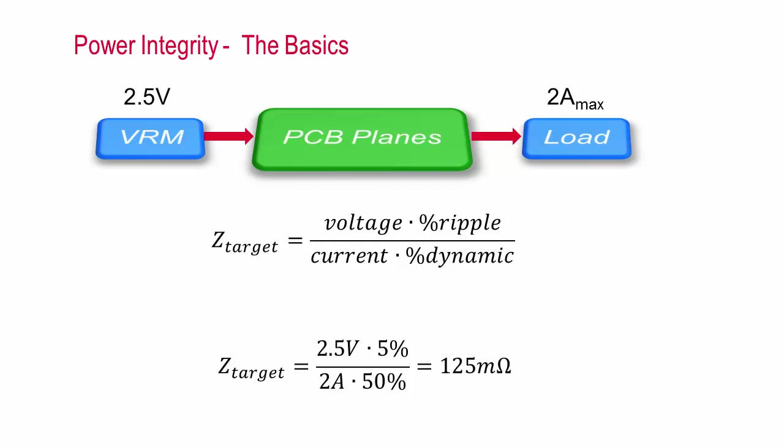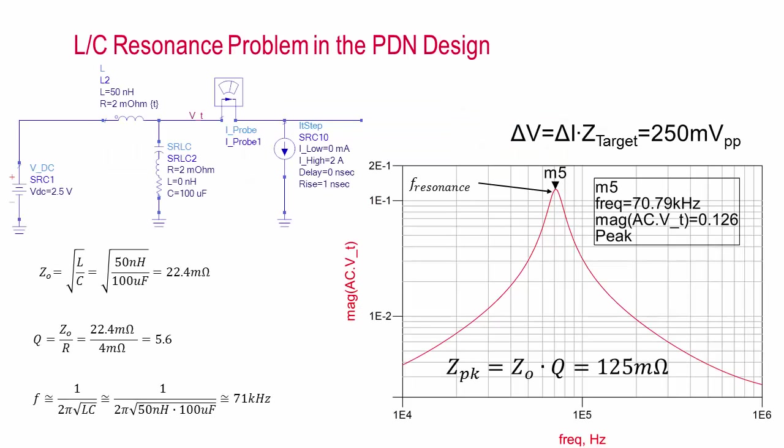The VRM, PC board, and decoupling capacitors are each comprised of resistive, inductive, and capacitive elements. These elements can result in the classic LC circuit resonances. Each resonance can be described by frequency, characteristic impedance, and Q, as I've shown mathematically here. Following the target impedance concept, the voltage transient is the product of the load current change and the target impedance. We'll use a 2.5 volt, 2 amp power system for our examples. The target impedance guideline would establish the peak impedance to be 125 milliohms.